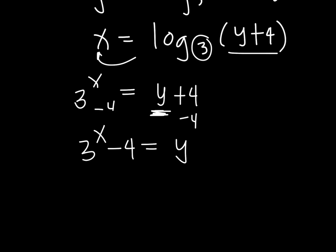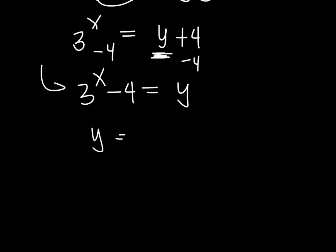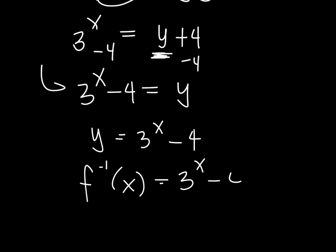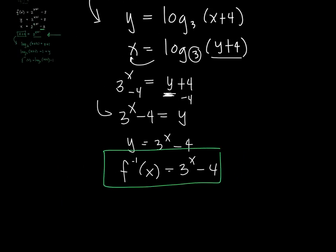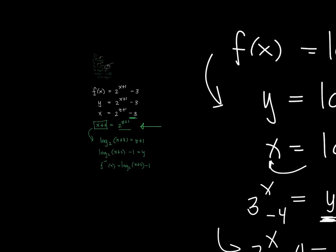Now subtract 4 from both sides to isolate y. The inverse is y = 3 to the x minus 4, so f inverse of x = 3^x minus 4. The same approach was applied, except this time we converted from a logarithmic equation to an exponential equation. That's how you find the inverse of both exponential and logarithmic functions.